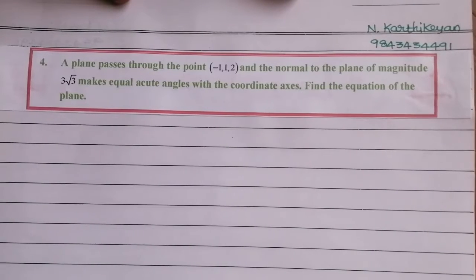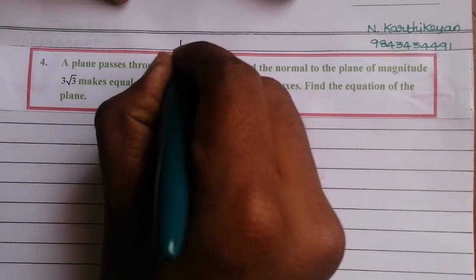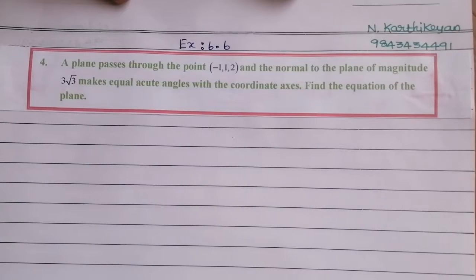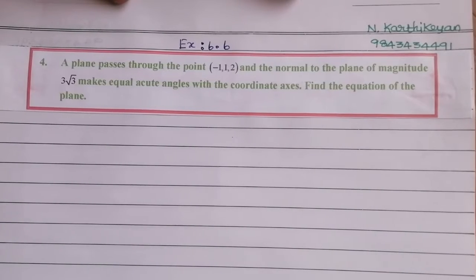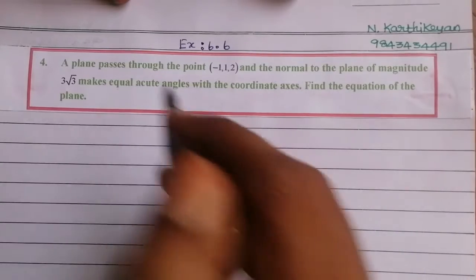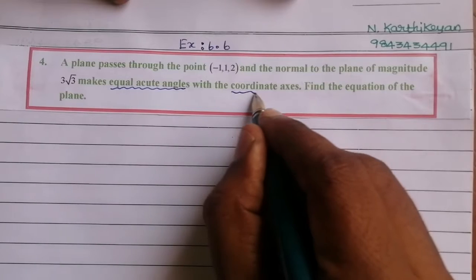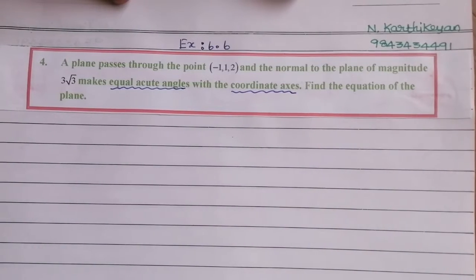Hi, today we are going to discuss vector algebra, equation of the plane in exercise 6.6. The fourth question: a plane passes through the point minus 1, 1, 2 and the normal to the plane of magnitude 3√3 makes equal acute angles with the coordinate axes. Find the equation of the plane.